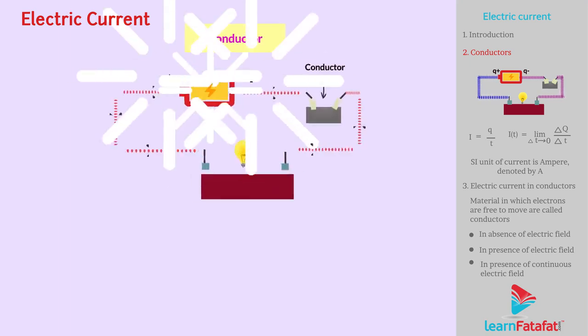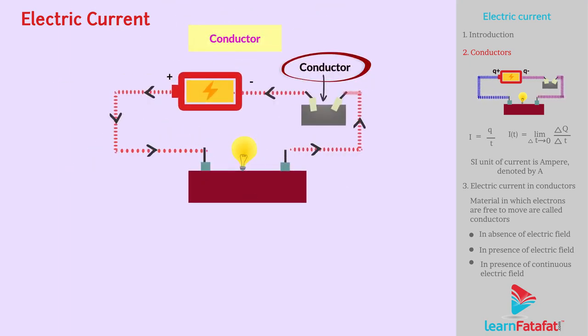When a conductor is connected to a battery, electric charges, i.e., by convention, positive and negative charges, flow through it. Say, for a small area, the net amount of positive charge Q+ flowing across the area in the forward direction. Also, Q- is the net amount of negative charge flowing in the opposite direction.